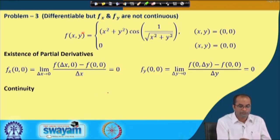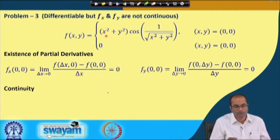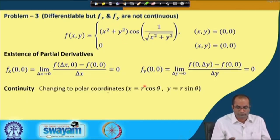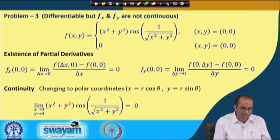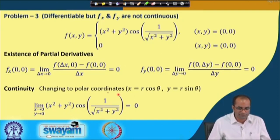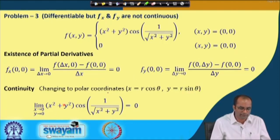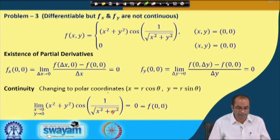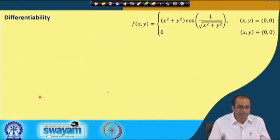For continuity: as (x, y) → (0,0), the function is the product of x² + y² (which goes to 0) and the cosine term (which is bounded). So the limit is 0, equal to f(0,0). This can also be verified using polar coordinates, where r² appears in the numerator, giving the limit 0 as r → 0.